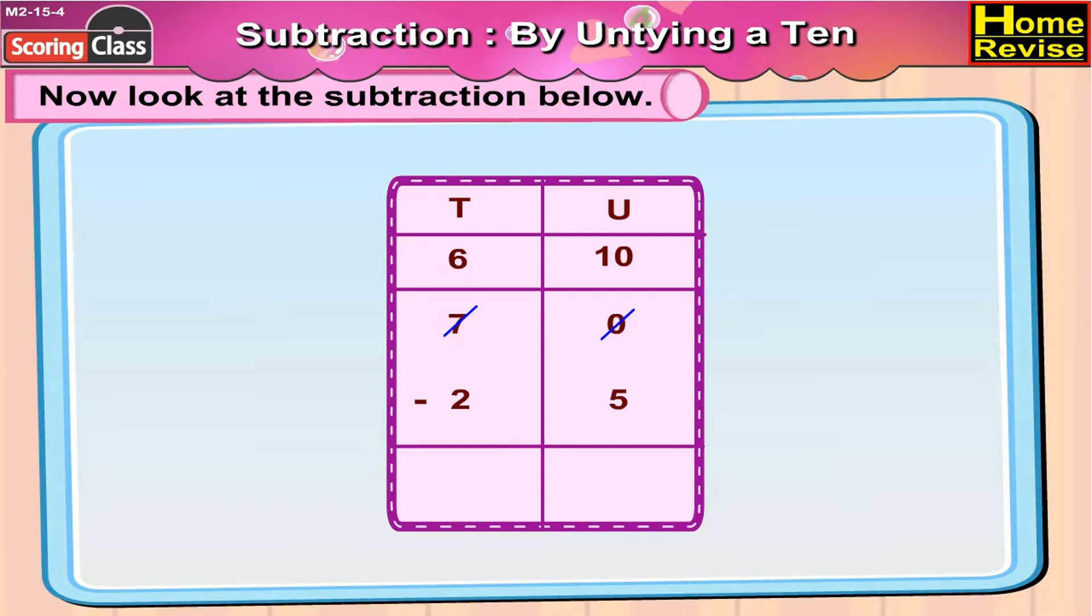7 tens 0 units is the same as 6 tens 10 units. Now 10 units minus 5 units is 5 units. 6 tens minus 2 tens is 4 tens, which means 70 minus 25 is equal to 45.